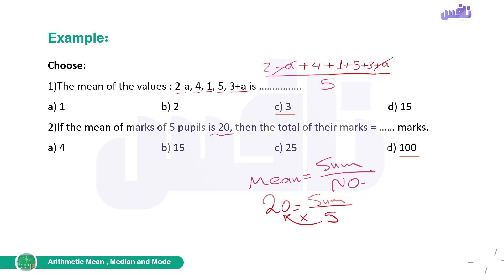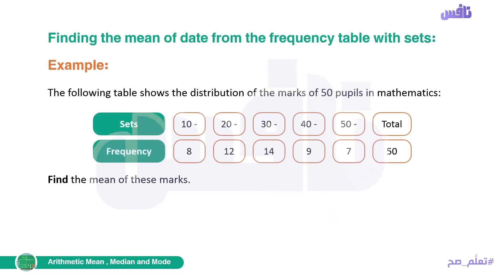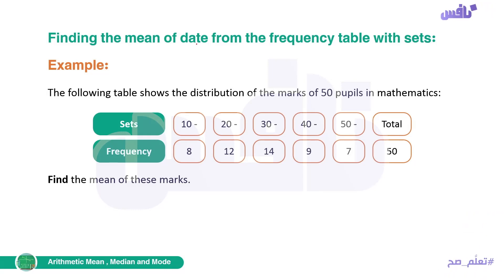That was everything we studied in first prep. Now what's new this year regarding the mean? The new thing this year is: finding the mean of data from the frequency table with sets — meaning we will have a frequency table with sets, and we will find the mean from that table.